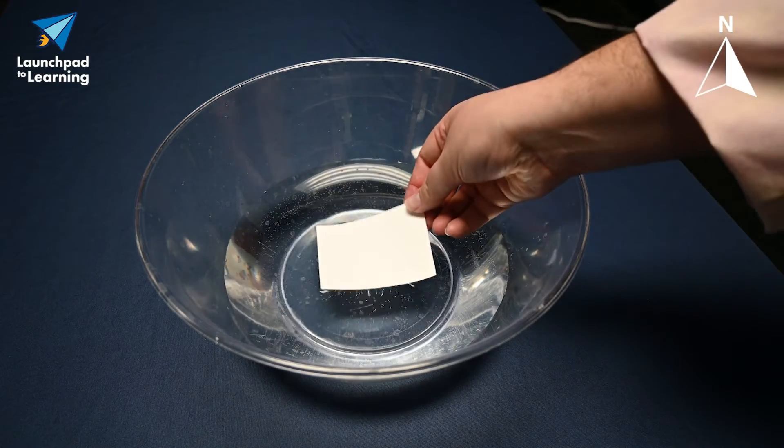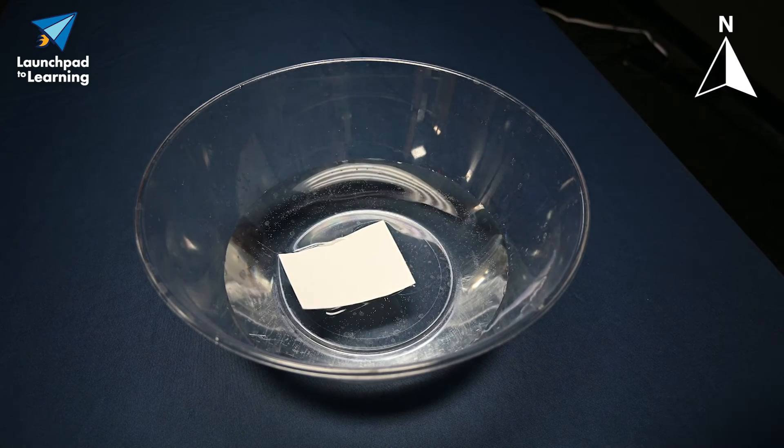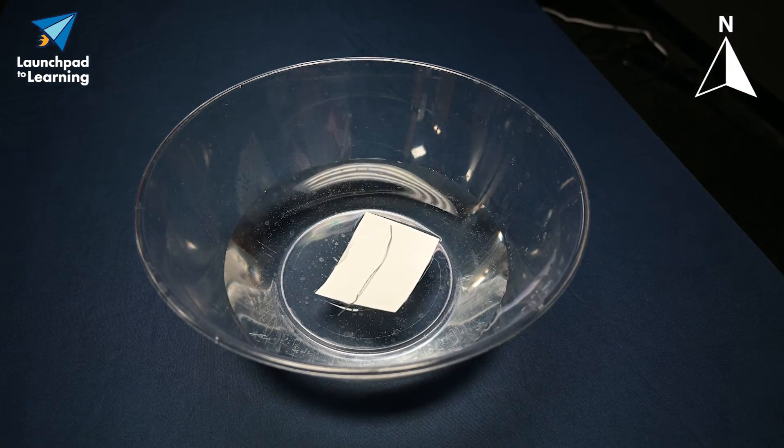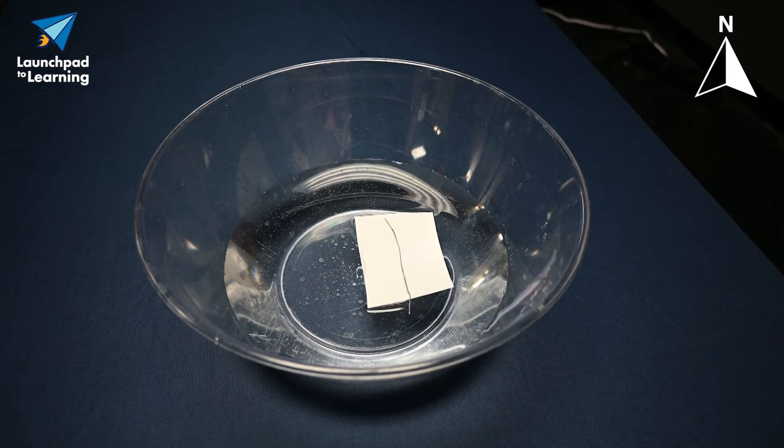Once it's magnetized, we can make a compass. Take your small piece of cardstock and float it on the water. Now, if we lay our magnetized paper clip onto the cardstock, we should see that the paper clip will move to point towards north.